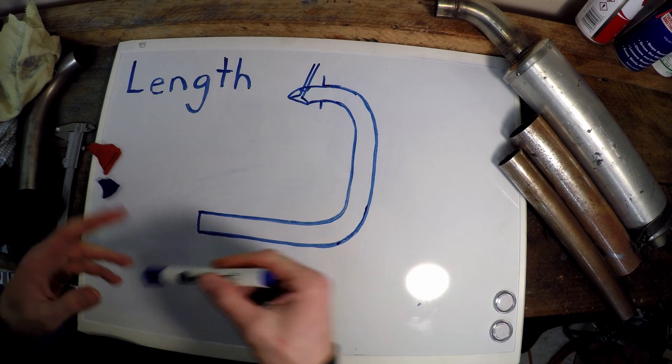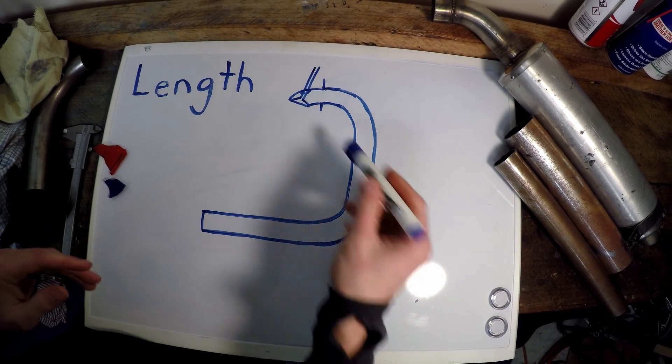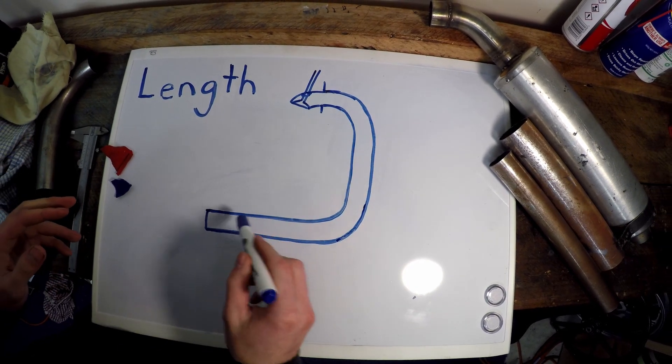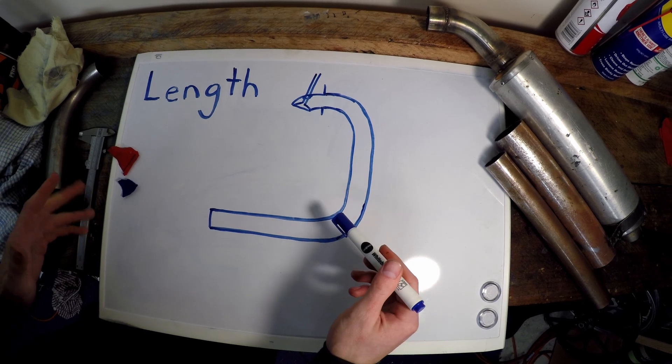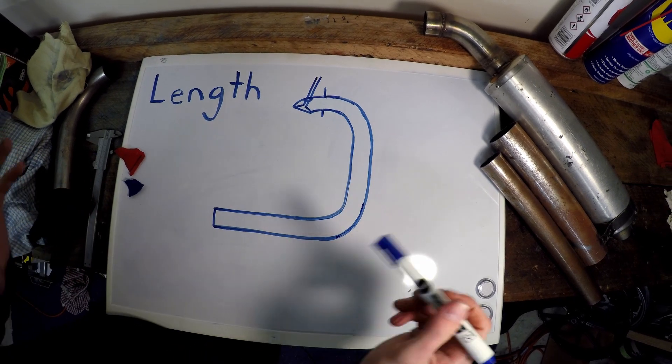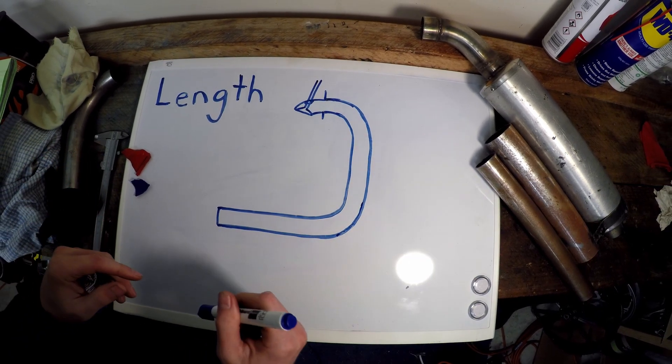The second part is exhaust length. To sum it up really quickly, a shorter pipe will make more power at higher RPM than a long pipe, but a longer pipe will work a lot better at lower RPM.